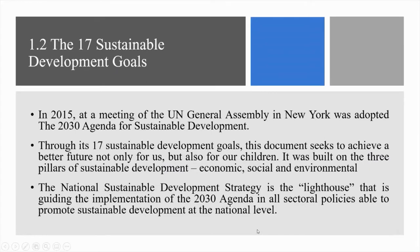Subchapter 1.2: The 17 Sustainable Development Goals. In 2015, at a meeting of the UN General Assembly in New York, a 2030 Agenda for Sustainable Development was adopted. Through its 17 Sustainable Development Goals, this document seeks to achieve a better future, not only for us, but also for our children. It was built on the three pillars of sustainable development: economic, social and environmental. The National Sustainable Development Strategy is the lighthouse guiding the implementation of the 2030 Agenda in all sectoral policies able to promote sustainable development at the national level.